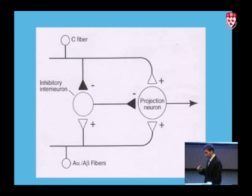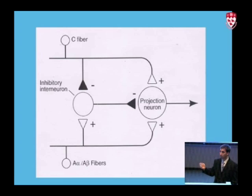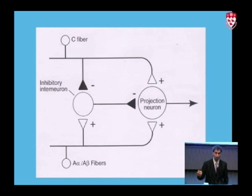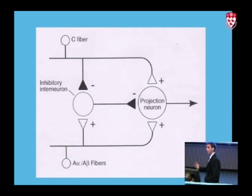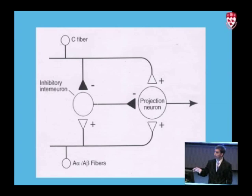What the gate control theory actually tells us is that there are two major inputs into the nervous system. We have small diameter afferents, or C fibers, and we have large diameter afferents, shown here as A alpha and A beta fibers. Small diameter afferents carry nociception. Large diameter afferents are coming from the skin, from the muscles, GTOs, muscle spindles, and from the joint mechanoreceptors themselves.